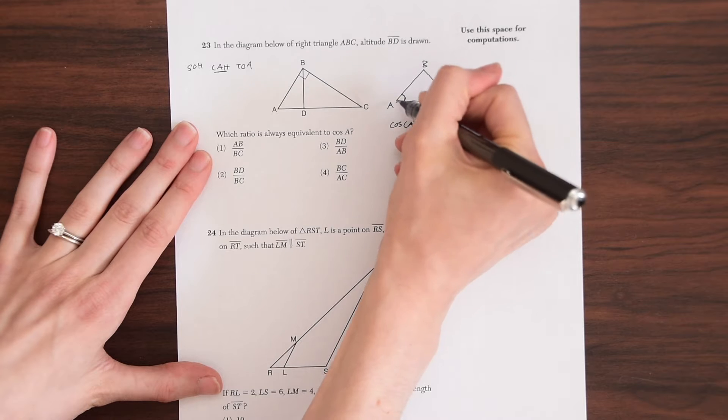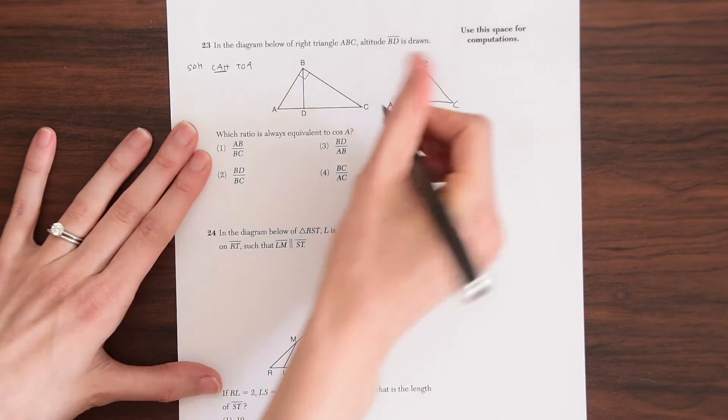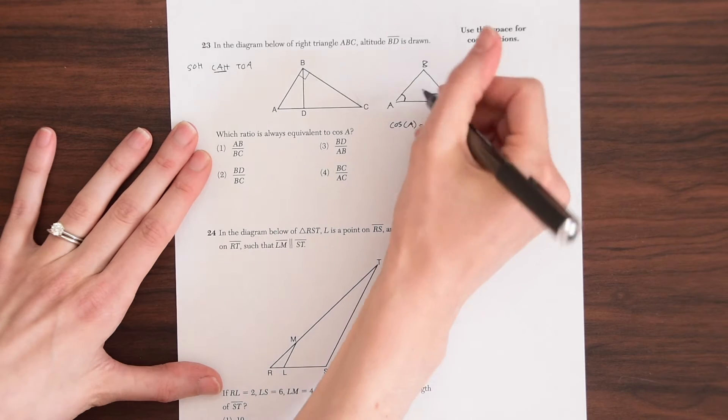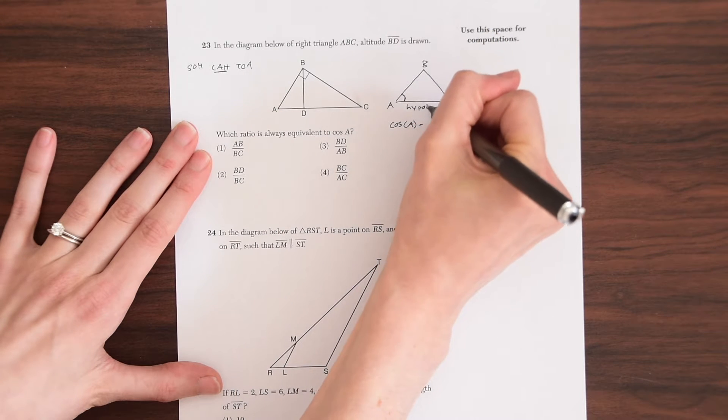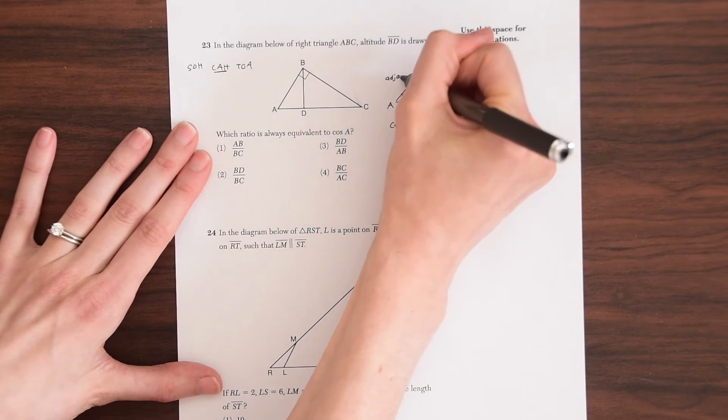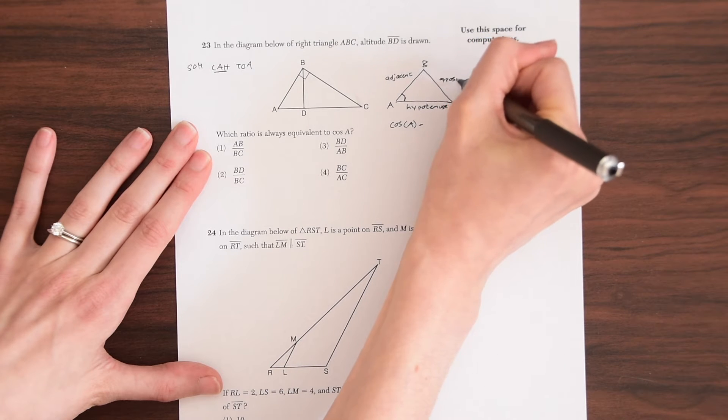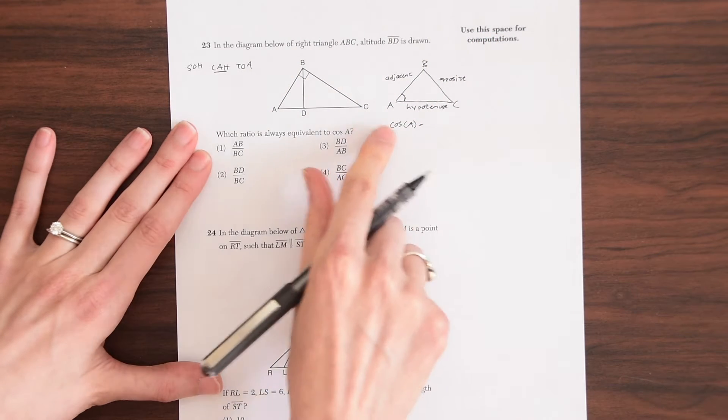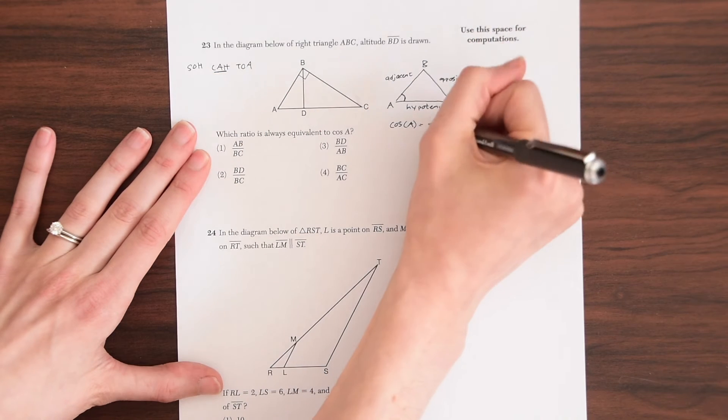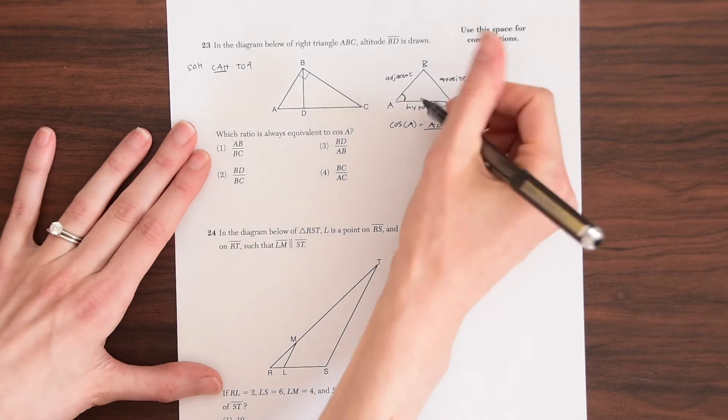So if we're looking at the cosine of A, this angle right here, we want the adjacent. So this is the hypotenuse, right, because this is the longest side. So right here we have the hypotenuse. And then here is our adjacent over here. And then this is our opposite, which we don't need, but we just want to label all the parts. So cosine of A is the adjacent AB over the hypotenuse AC.